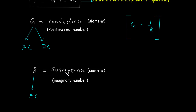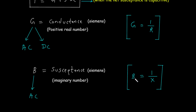Susceptance is an imaginary number and it is observed in AC. Susceptance is represented by capital B and its unit is Siemens. The formula for susceptance is B = 1/X, where X is the reactance. Simply, susceptance is the reciprocal of reactance.